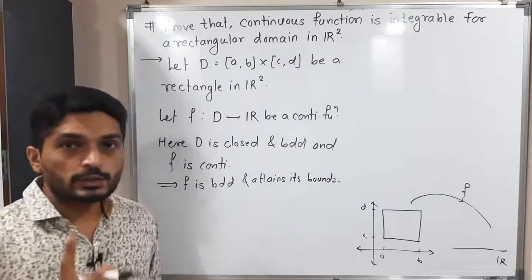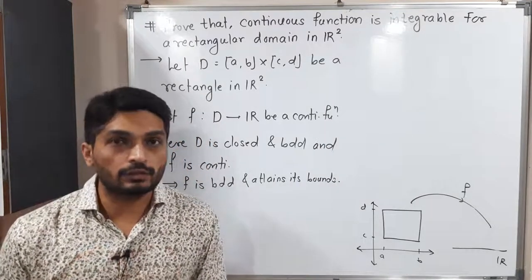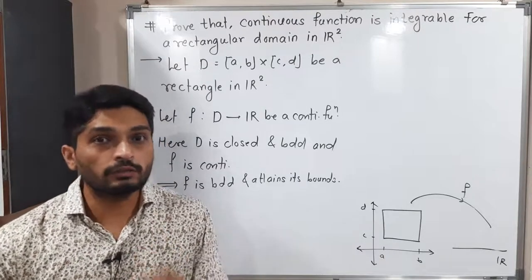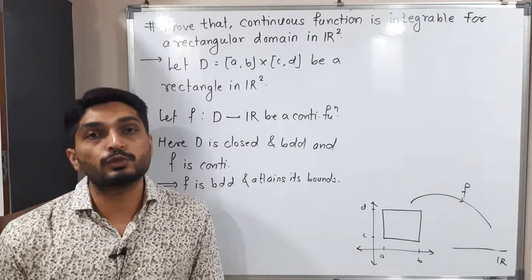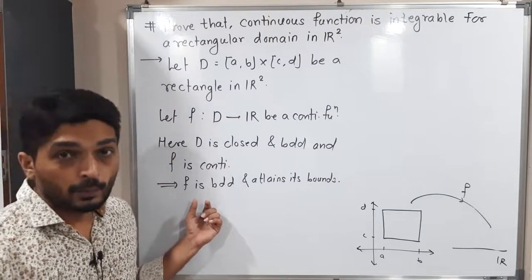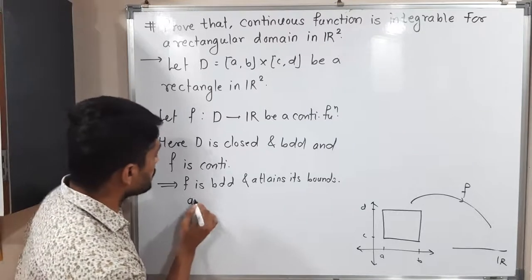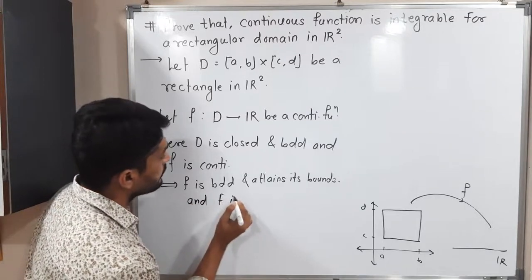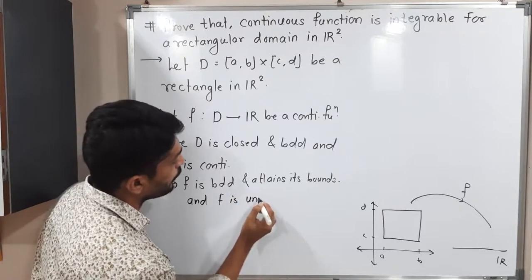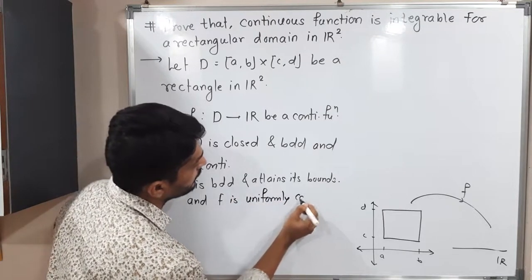As well as, if you have any continuous function defined on a closed and bounded domain then we say the function is uniformly continuous. So that result we can also use here. Therefore F is uniformly continuous — this is a very important thing.